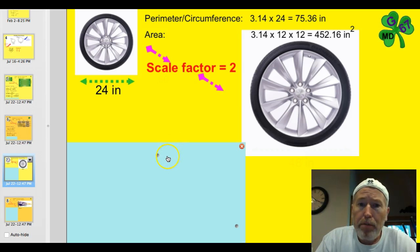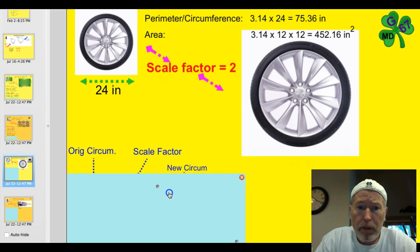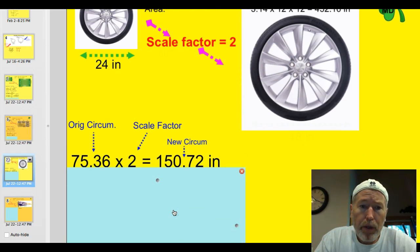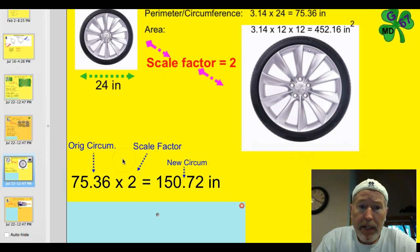So using the scale factor, we should be able to find the diameter, we should be able to find the area, and the circumference of this larger wheel. So let's go ahead and do it. So the original circumference was 75.36. If we take that times the scale factor of 2, the new circumference would be 150.72 inches.